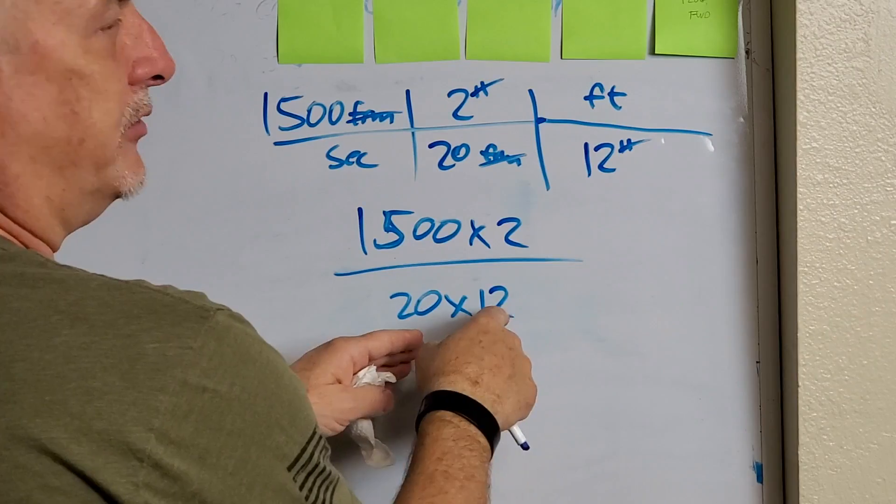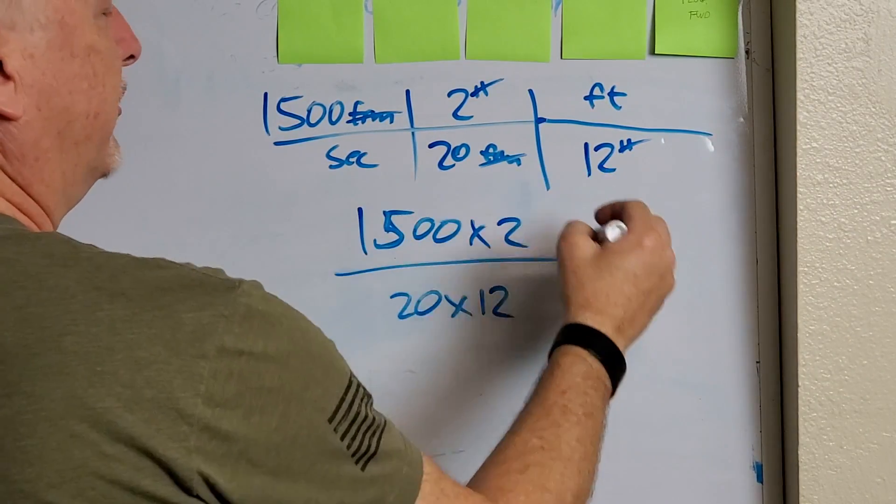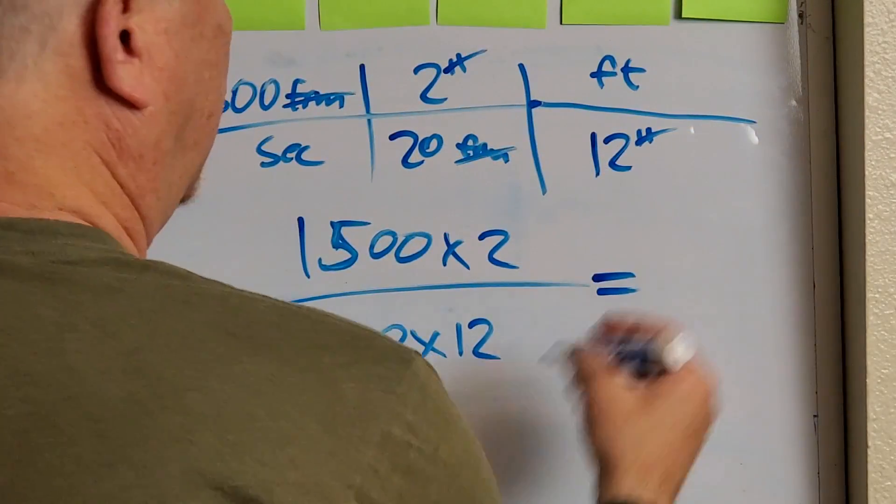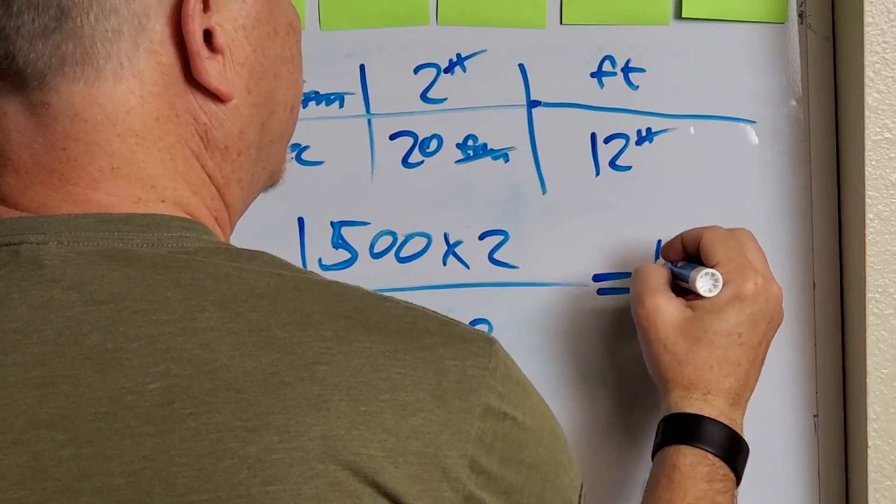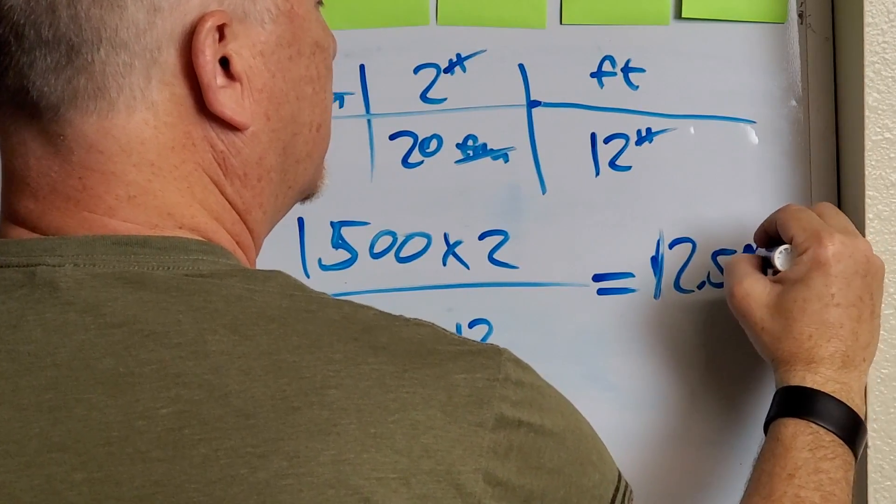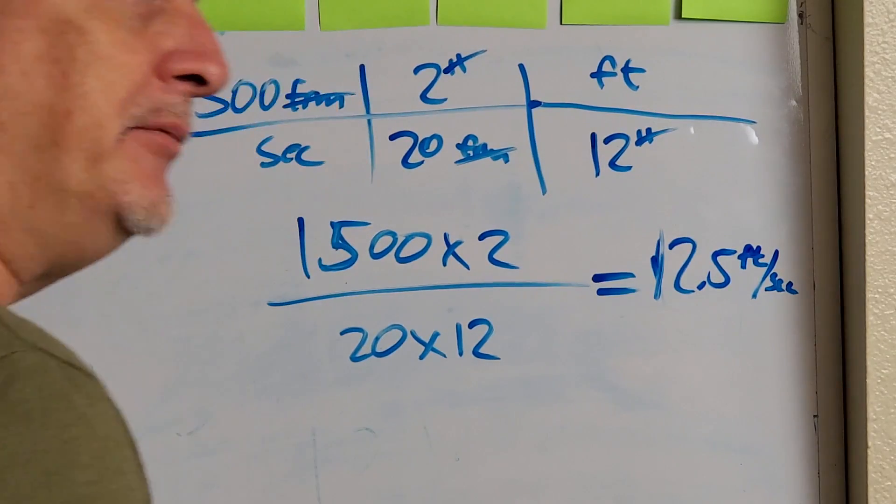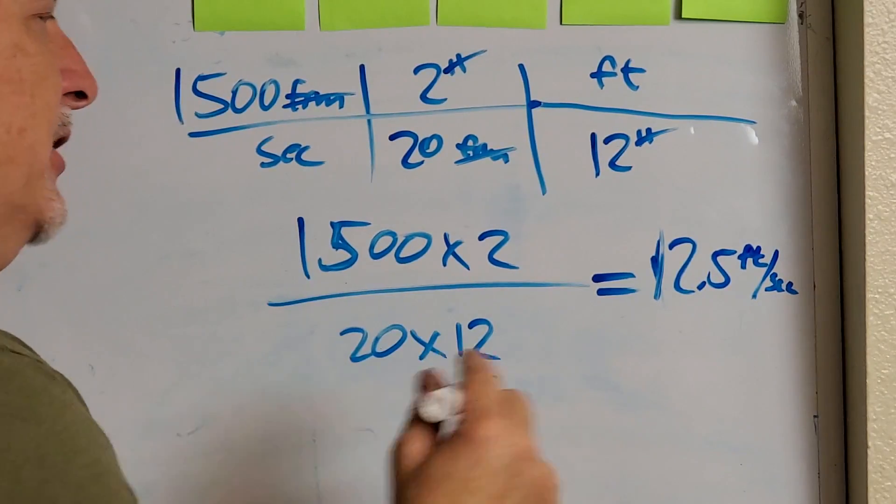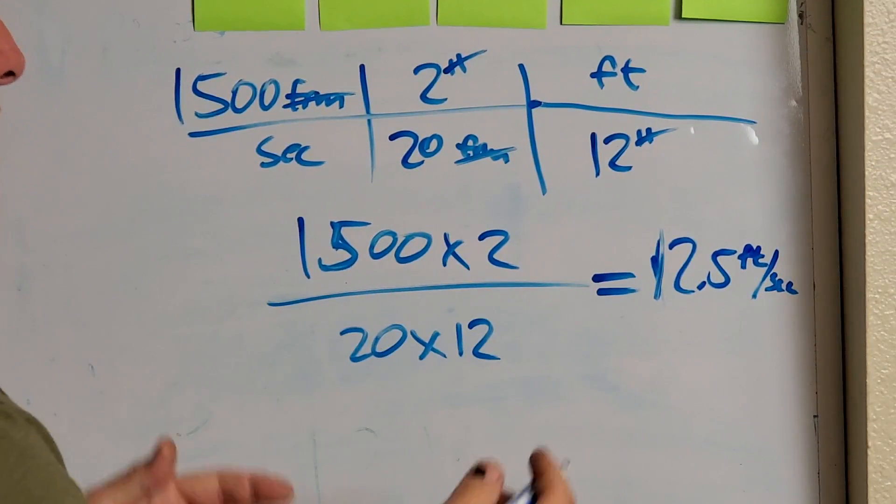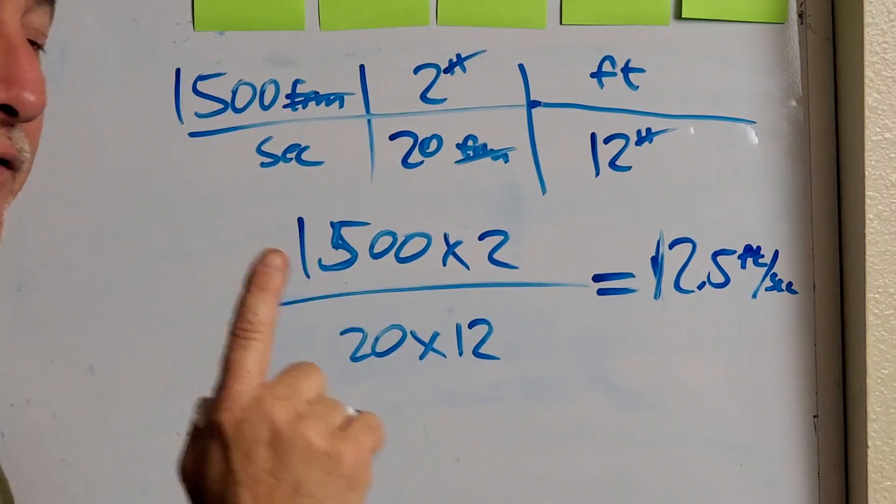1500 times 2 divided by 20 times 12. So I didn't go and say, what's 20 times, just I didn't say 3,000 divided. You just do all this just right out. Then just do this in your calculator and you will know. You'll get it right. And the answer in this case is 12.5 feet per second. So the velocity of that particular object moving back and forth inside this other object is 12.5 feet per second. Of course, if you want to convert to inches per second, inches per minute, feet per minute, all that stuff, it's just a matter of adding more steps to the ladder. Like that? Steps to the ladder.